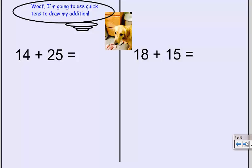Now, Scoop says, woof! I'm going to use quick tens to draw my addition. So, for fourteen, I'm going to draw one ten and four ones. For twenty-five, I need to draw two quick tens to represent the twenty and five ones. And I'll make these ones look different.